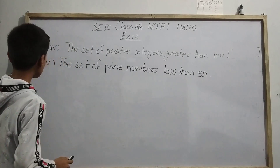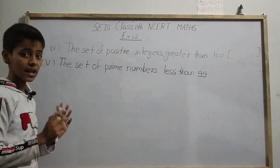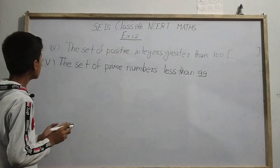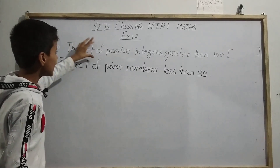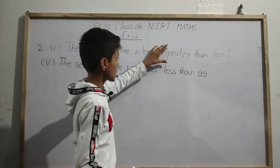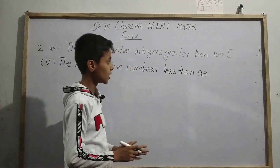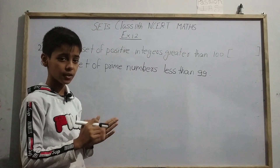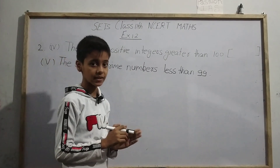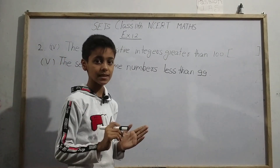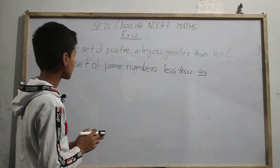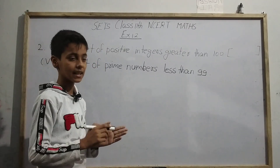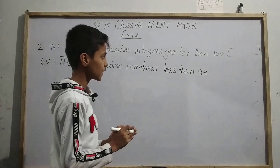Question number two was: which of the following sets are finite or infinite? This was the question. For the fourth set, we can see here that this is the set of all positive integers greater than 100. We have to tell whether this is a finite set or infinite set. Previously in my previous video I have also explained finite and infinite sets. So we have to check whether the set of positive integers greater than 100 is finite or infinite.